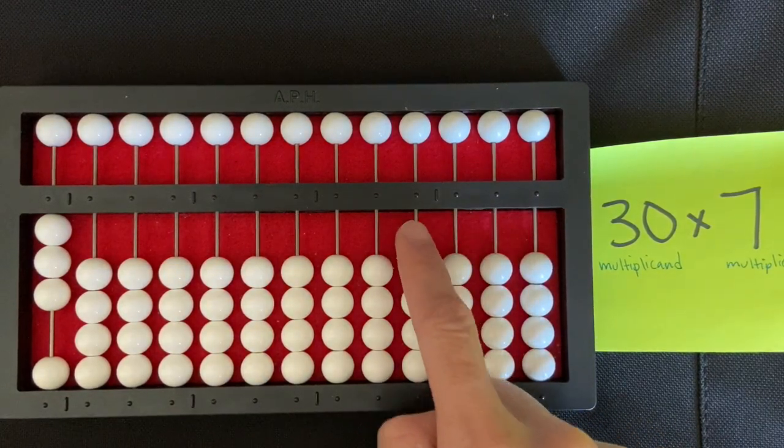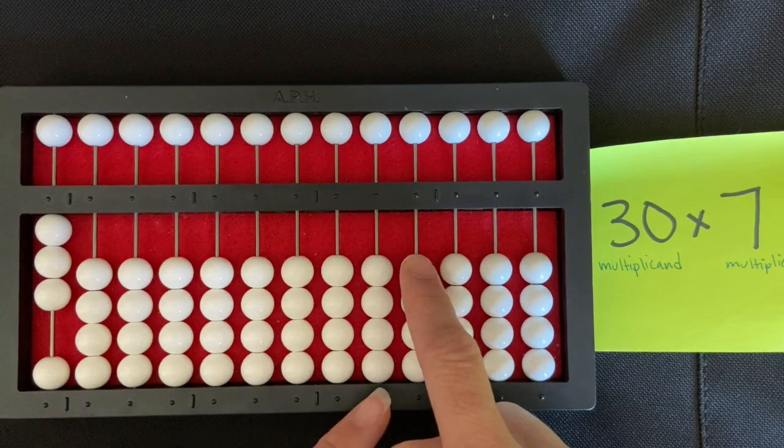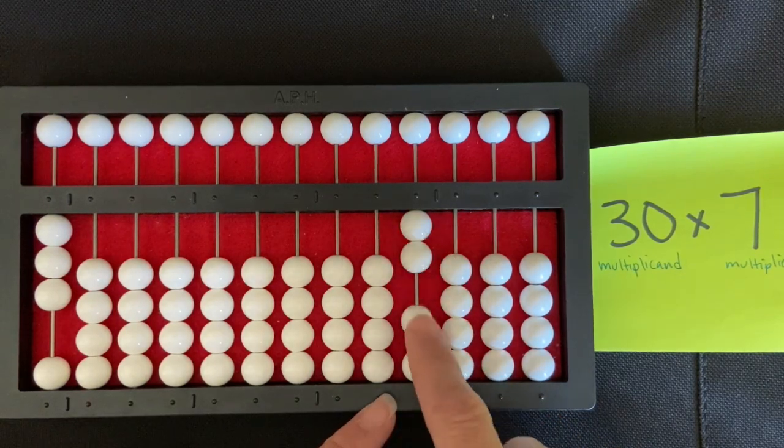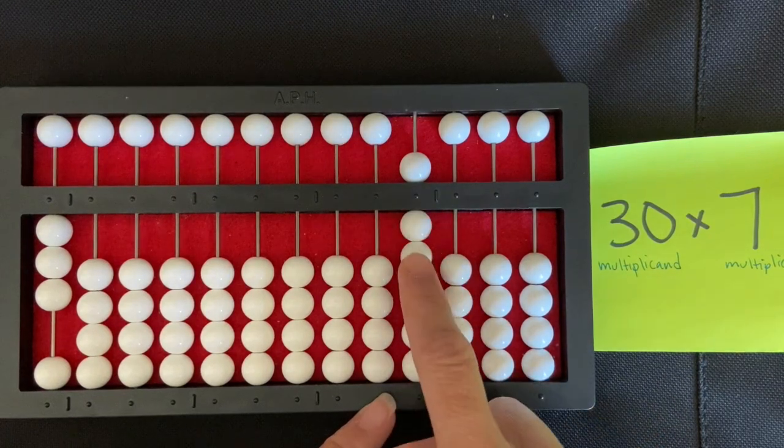So what I'm going to do is set my seven here in the thousands rod: one, two, three, four, five, six, seven.